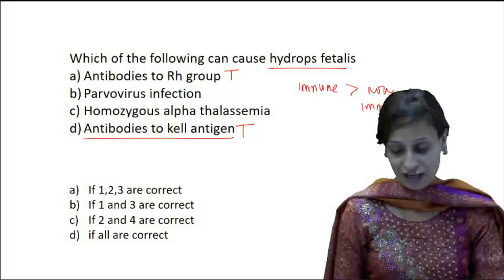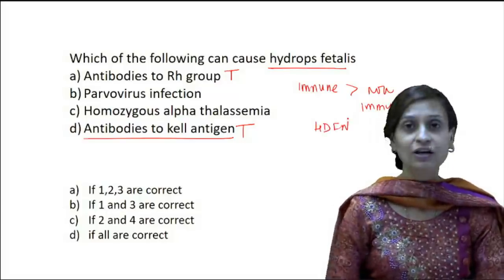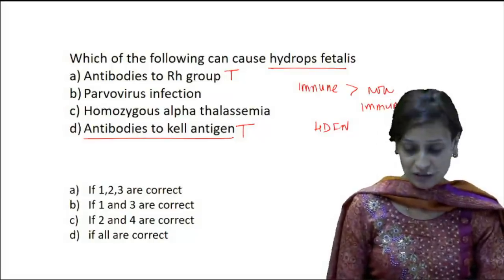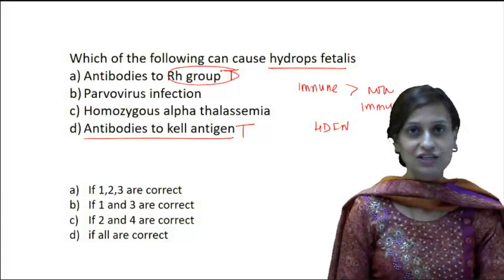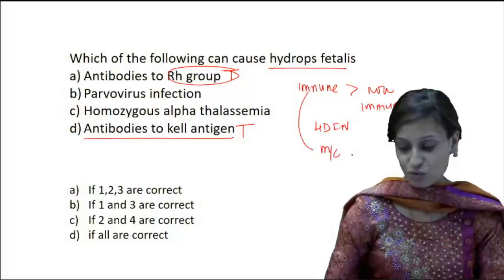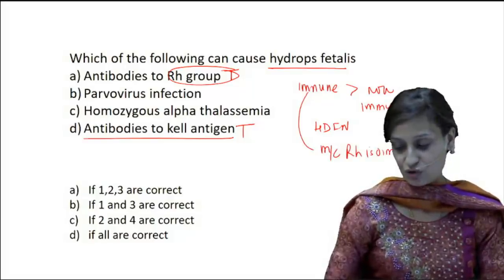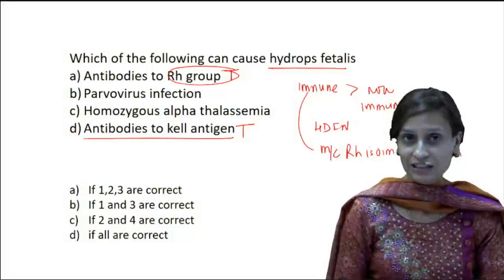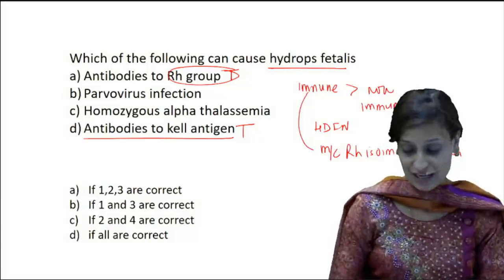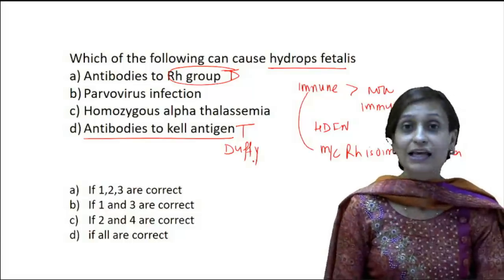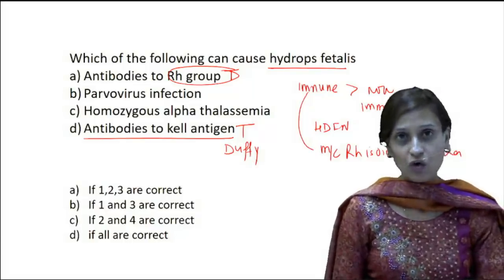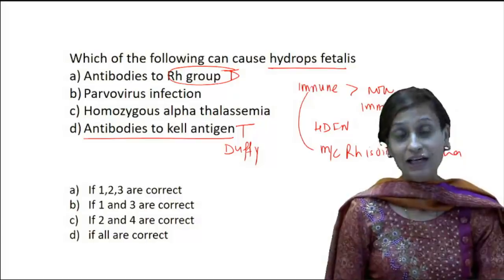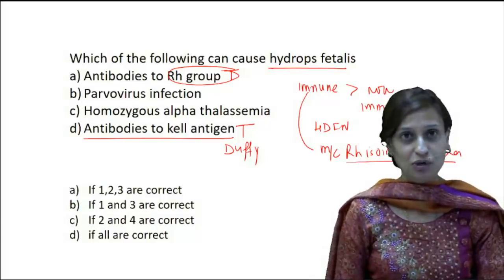This immune response causes HDFN — hemolytic disease of the fetus and newborn. Among immunological causes, the most common cause of HDFN is RH isoimmunization. Along with the RH group, the Kell antigen, Duffy antigen, and ABO blood groups can also cause immune-mediated hemolytic disease of the fetus and newborn, or hydrops fetalis.